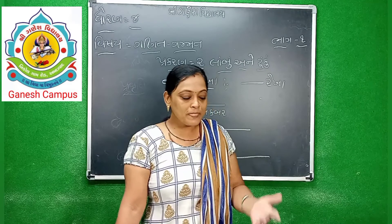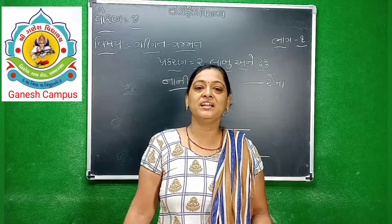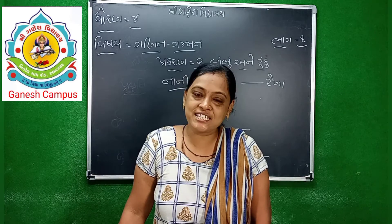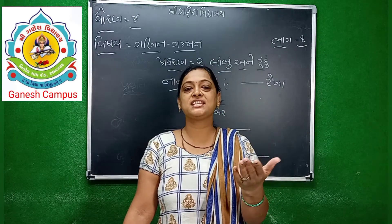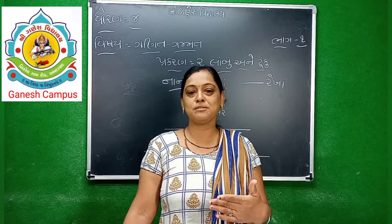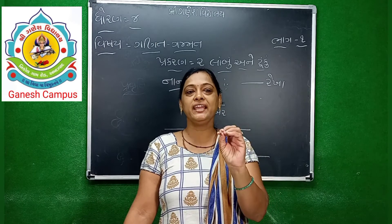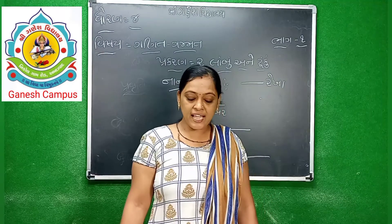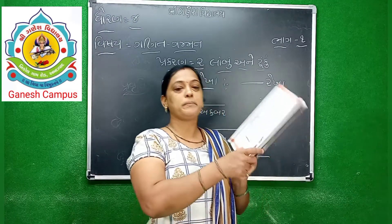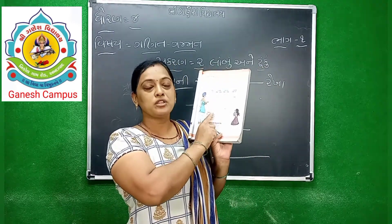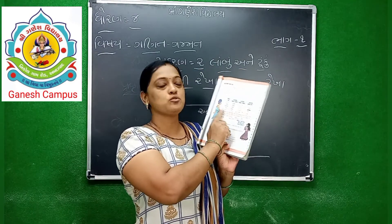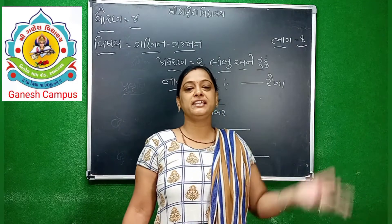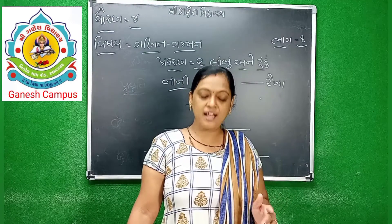અંદાજો - કેટલા cm ઊંચાઈ? 5 cm, 6 cm, 7 cm - કોઈની ઊંચાઈ અલગ અલગ રીતે હોય છે. વર્ષ જતાં બાળકની ઊંચાઈ વધે છે. ત્રીજા ધોરણ, ચોથા ધોરણ - કોષ્ઠક આપ્યું છે. એમાં તમારા અલગ અલગ મિત્રોના નામ લખવાના, ગઈ સાલ ની ઊંચાઈ અને આ સાલ ની ઊંચાઈ.